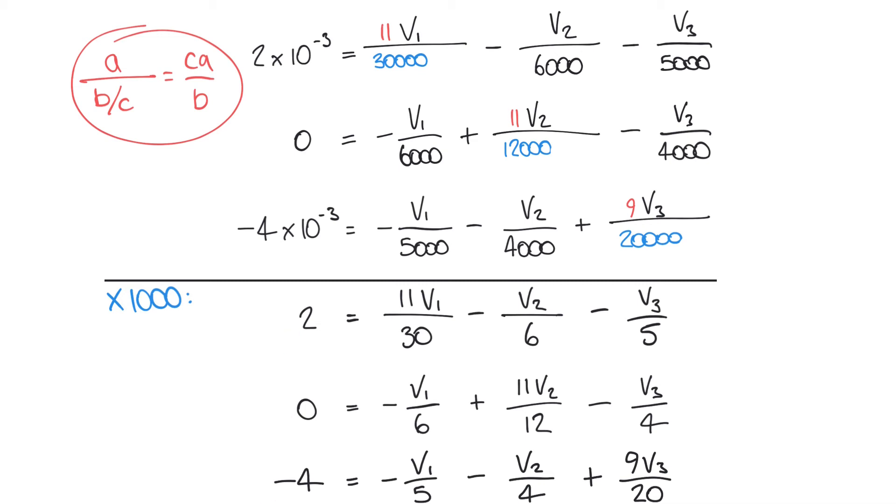We can continue this process by looking for a common multiple in the denominators of each equation. Let's take this first equation: it has denominators of 30, 6, and 5. Well, 30 is a multiple of each of these terms. 30 goes into 30 once, 6 goes into 30 five times, and 5 goes into 30 six times. So let's multiply everything in this first equation by 30. Similarly we can do the same with our second equation. We could multiply all the terms in the second equation by 12, because 6, 12, and 4 all go into 12. We could multiply all the terms in the third equation by 20, because 4, 5, and 20 all go into 20.